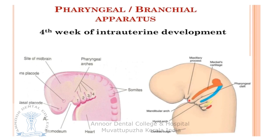We already know about the formation of the foregut. The foregut is bounded ventrally by the pericardium and by the developing brain cranially. It is separated from the stomodeum by the buccopharyngeal membrane, which breaks down and opens the foregut to the exterior stomodeum.